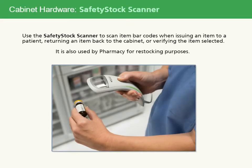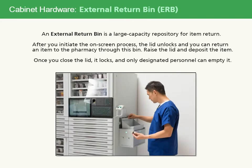Use the safety stock scanner to scan item barcodes when issuing an item to a patient, returning an item back to the cabinet, or verifying the item selected. It's also used by pharmacy for restocking purposes. An external return bin is a large capacity repository for item return. After you initiate the on-screen process, the lid unlocks and you can return an item to the pharmacy through this bin. Raise the lid and deposit the item. Once you close the lid, it locks and only designated personnel can empty it.